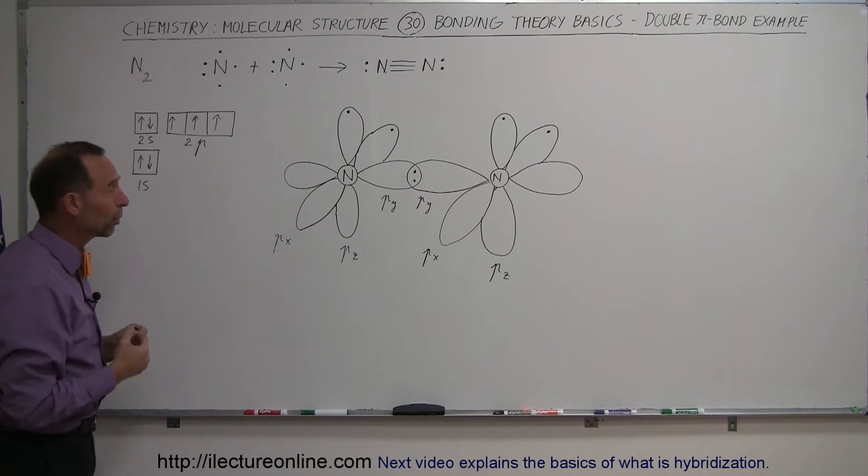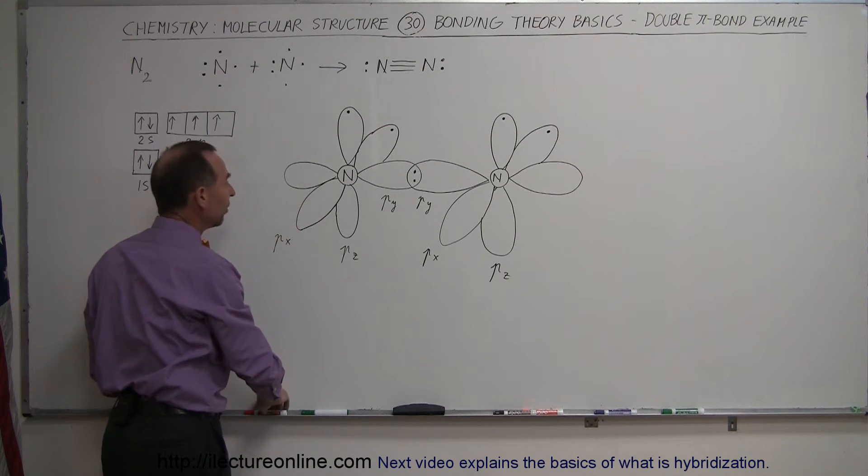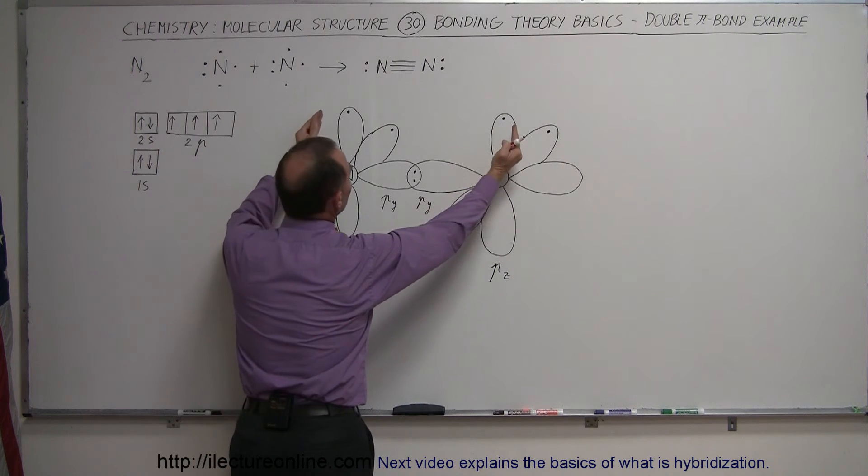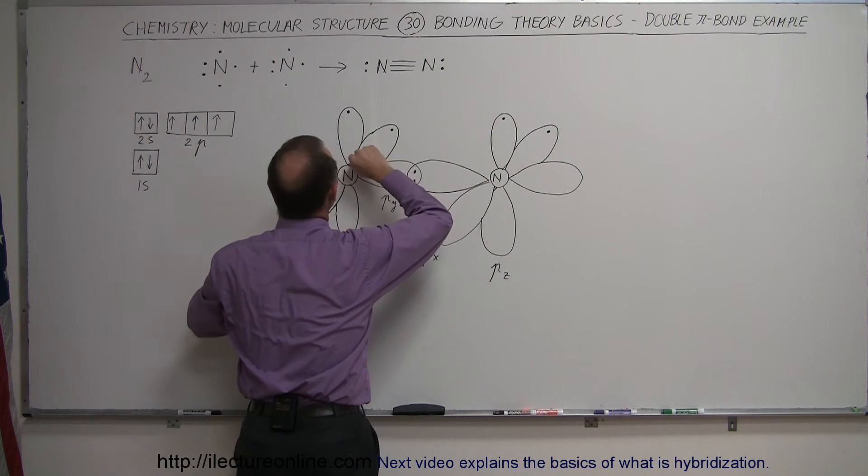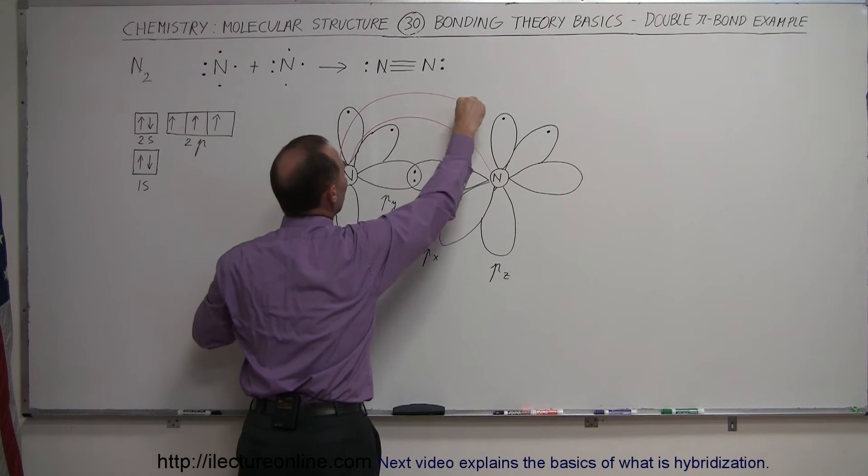What about the other two p orbitals - the one in the z direction and the one in the x direction? Well, what happens is the one in the z direction will come and bend towards like this